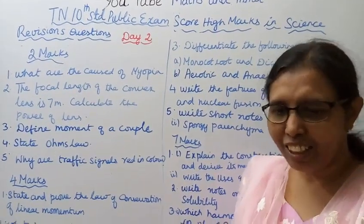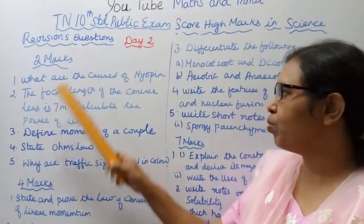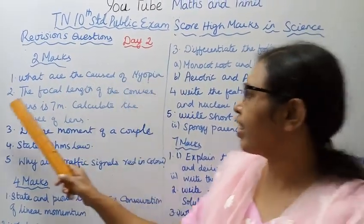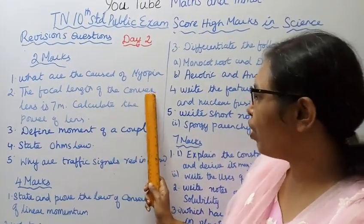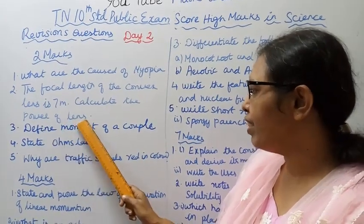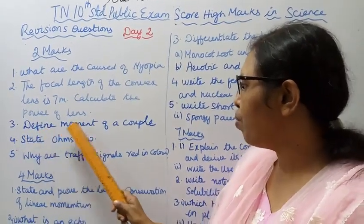We'll cover two-mark questions for students aiming for high scores. First: What are the causes of myopia? Second: The focal length of the convex lens is 7 meters, calculate the power of the lens.